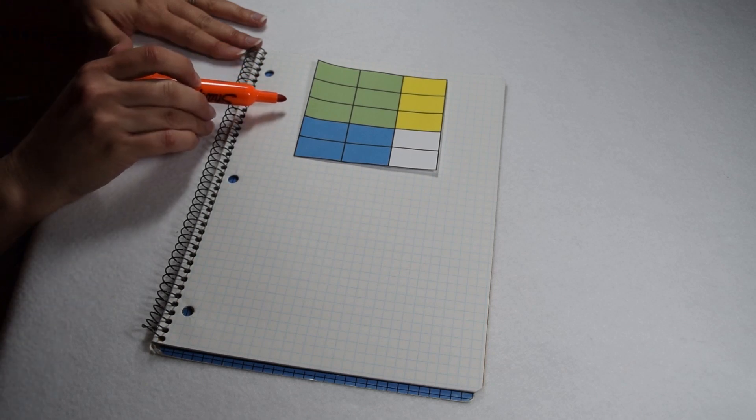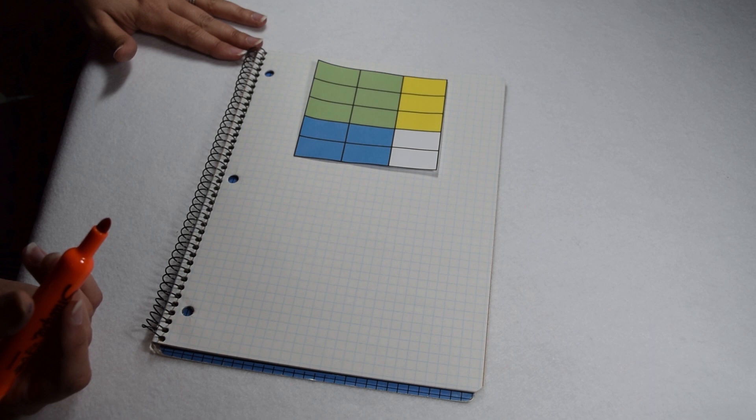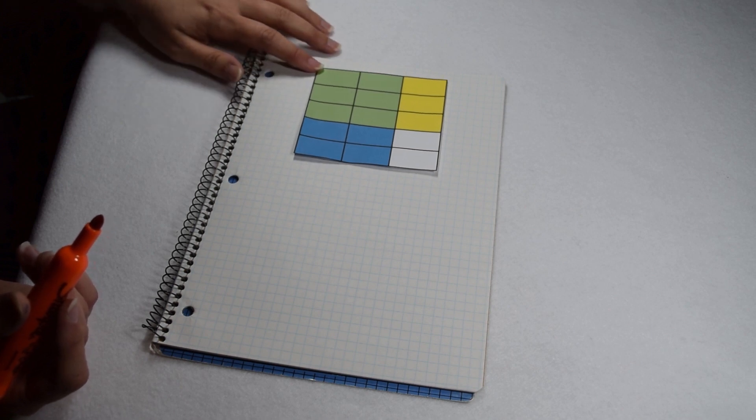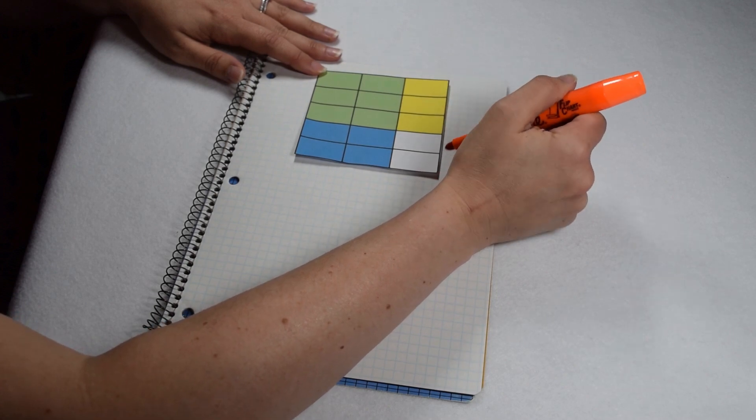This time we're going to start with an area model and work backwards to figure out which multiplication problem it illustrates. Let's start by looking how it's split up horizontally. I can see horizontally that we've split it into 1, 2, 3, 4,